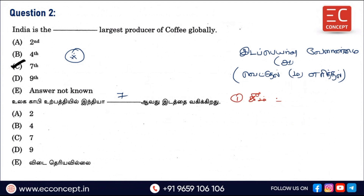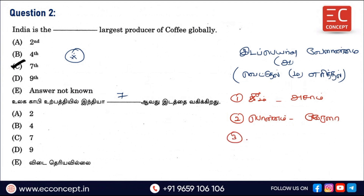How to do Jhum cultivation? It is called Azam in some regions. Let's talk about Jhum. In Kerala it is called Ponnam. The regional names include Podu, Bevar, and Mazan.